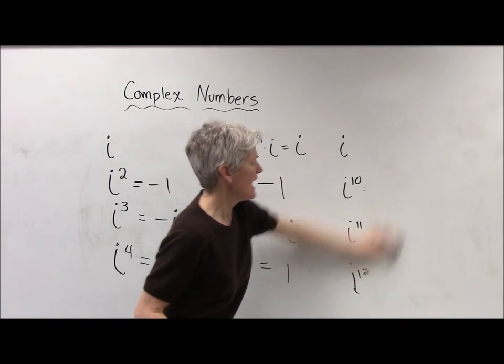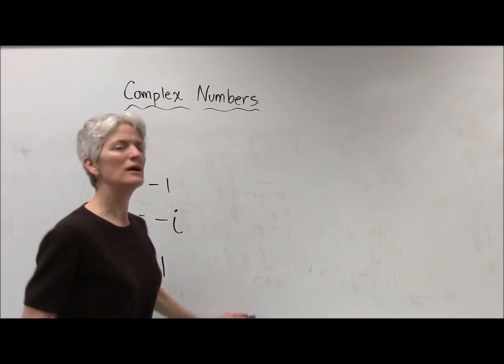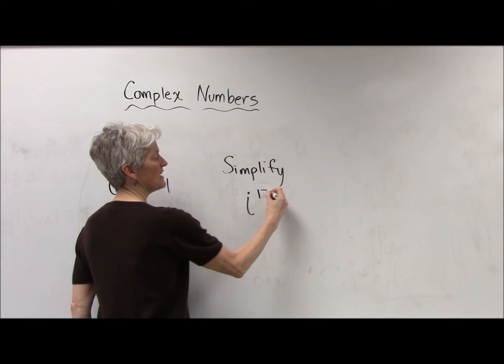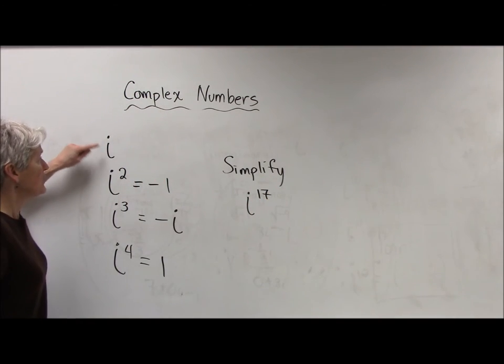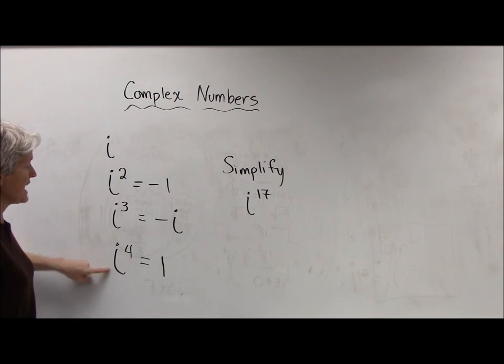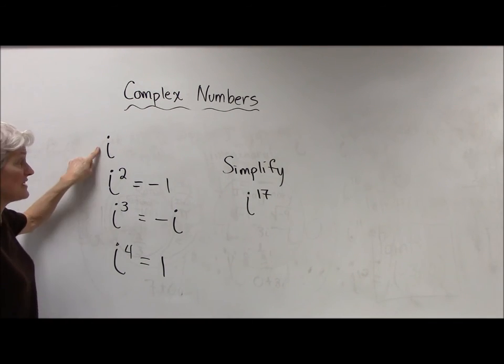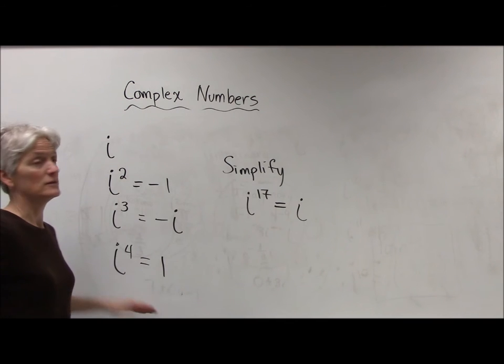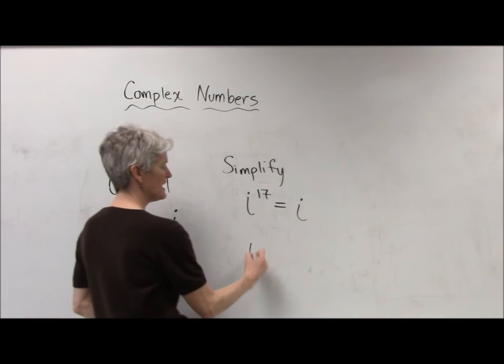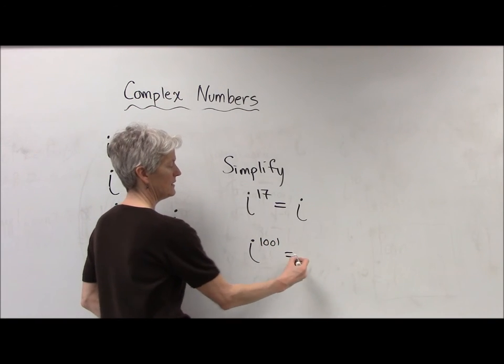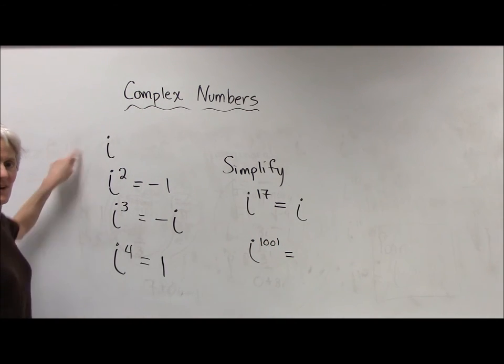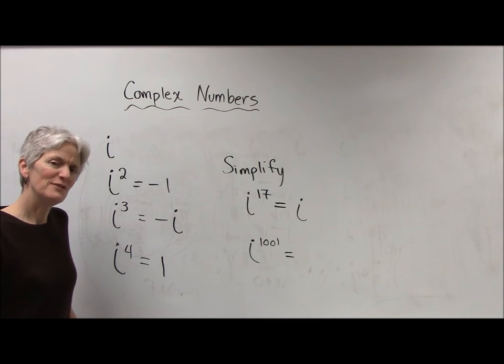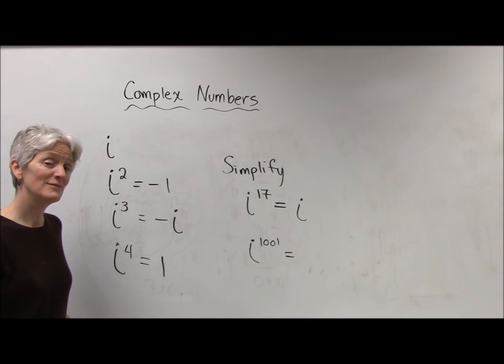That means if I have an i to a bigger power, I can simplify it. So let's say I want to simplify i to the 17. Well, here's i to the 1, 2, 3, 4, 5, 6, 7, 8, 9, 10, 11, 12, 13, 14, 15, 16, 17. All right. That's going to be the same as i. i to the 17 is going to go through my cycle. What if I had i to the 1,001? One, two, three, four. Yeah. There's got to be a shortcut, right? So why don't you pause the video and see if you can come up with a shortcut. There are lots of different ways to do this. Give it a try.